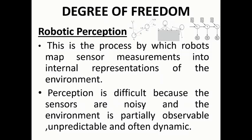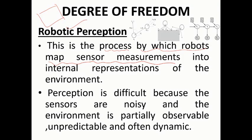Robotic perception is the process by which robots map sensor measurements into an internal representation of the environment. Using the perception process, the robot maps the environment one by one using sensor measurements into an internal representation, recording it to guide further action.